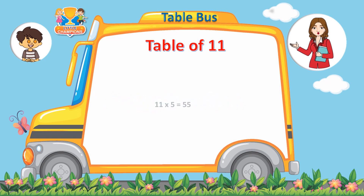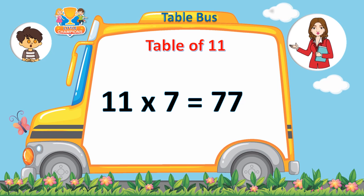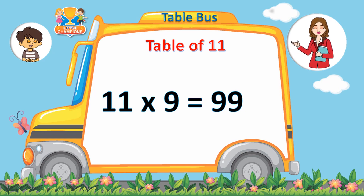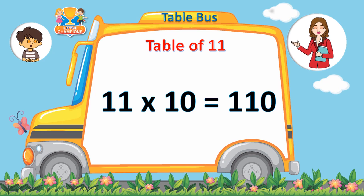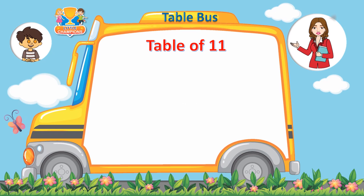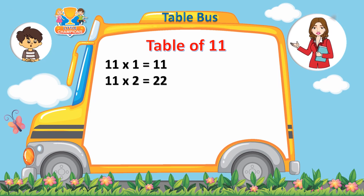11 sixes are 66, 11 sevens are 77, 11 eights are 88, 11 nines are 99, 11 tens are 110. 11 ones are 11, 11 twos are 22.